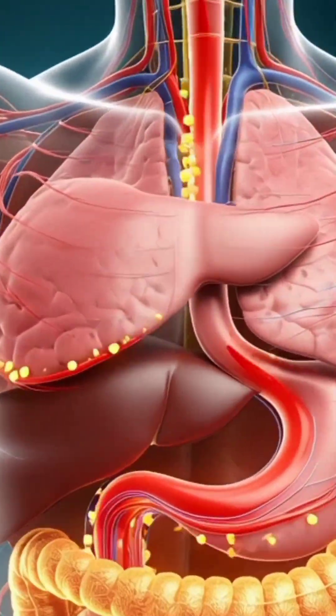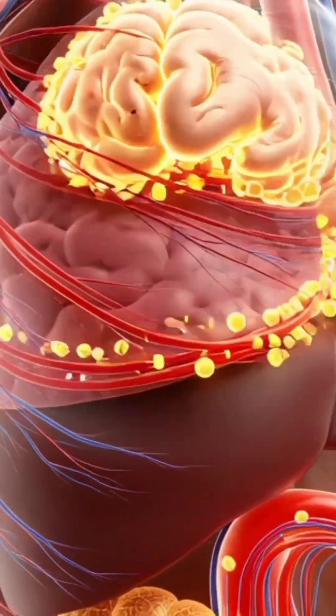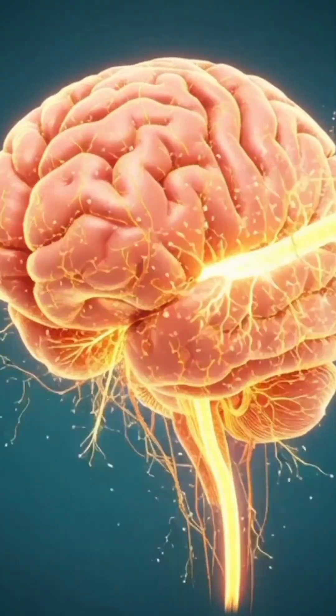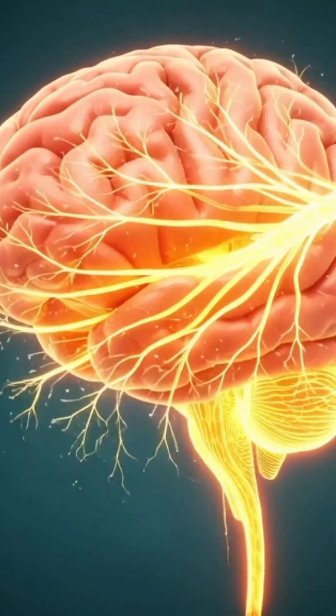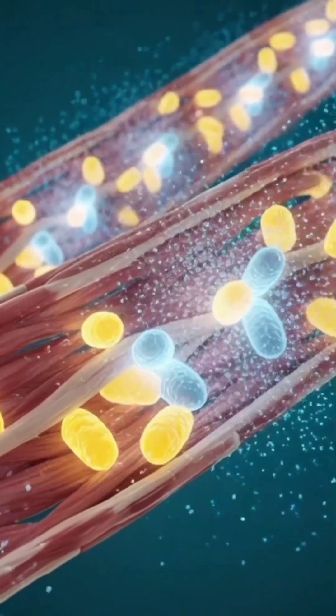Reaching the stomach, apple juice triggers gastric enzymes, while its malic acid helps break down food particles and supports overall digestive efficiency.